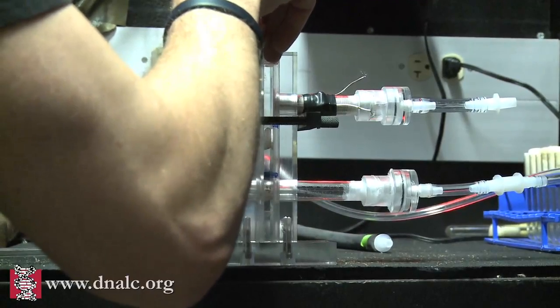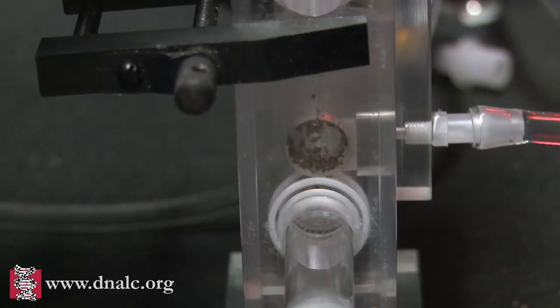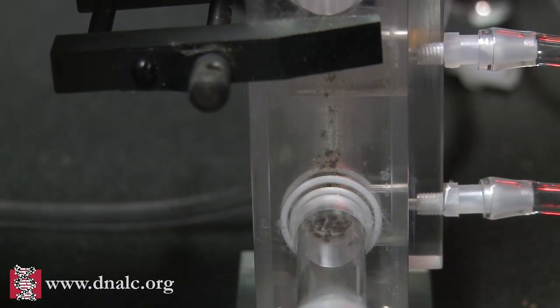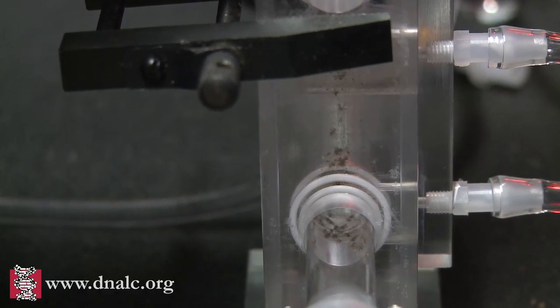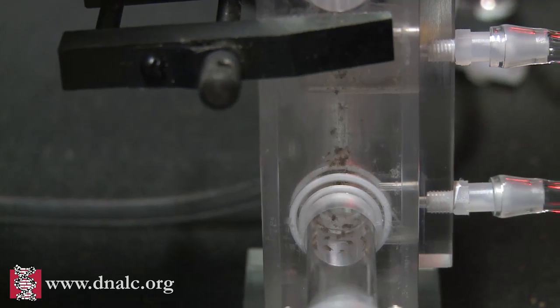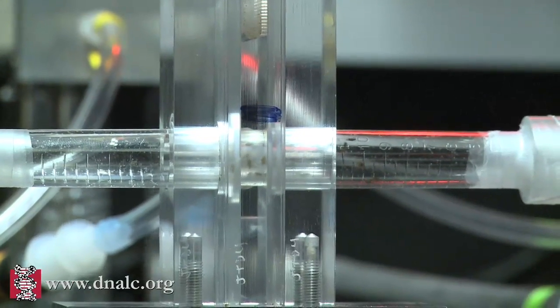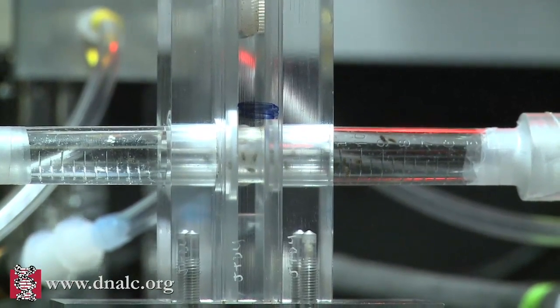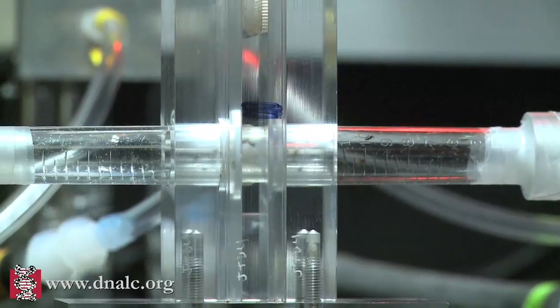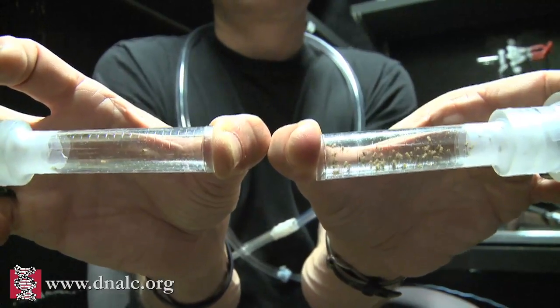We give the flies a choice by lowering them down in the elevator to the choice point where they simultaneously smell MCH on the right and OCT on the left. If they've learned their lesson that OCT predicts electric shock, they'll run to the right. And that's exactly what we see.